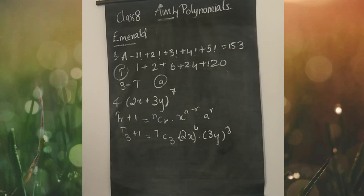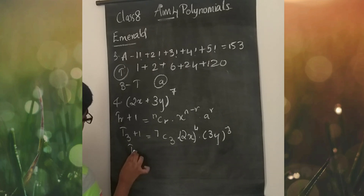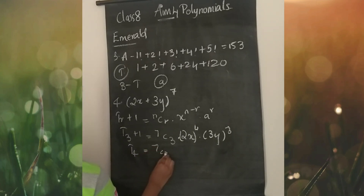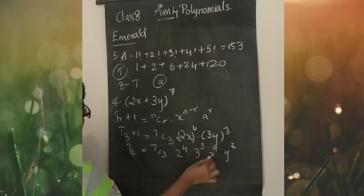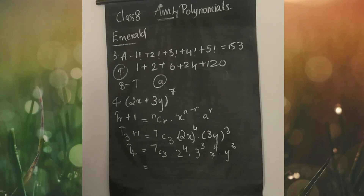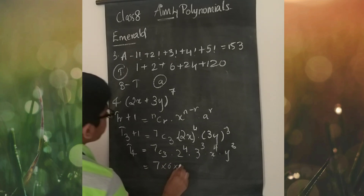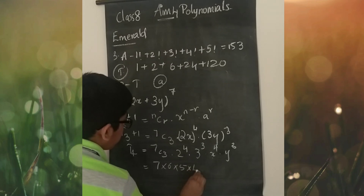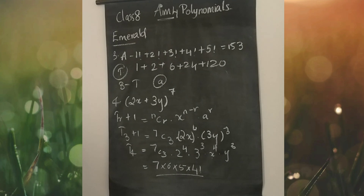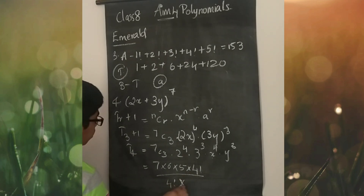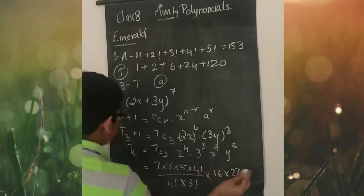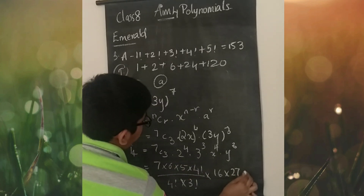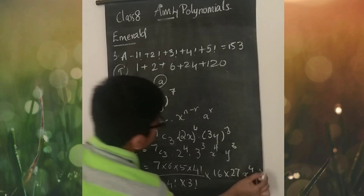This is what we get from the top. So T3+1 = T4 equals 7C3 into 2^4 into 3^3 into x^4 into y^3. For 7C3, write 7 factorial as 7 into 6 into 5 into 4 factorial, divided by 4 factorial into 3 factorial. For cancelling purposes only we stopped there. Into 16 into 27 into x^4 into y^3.